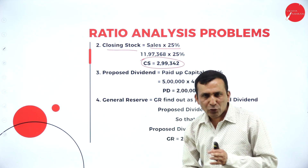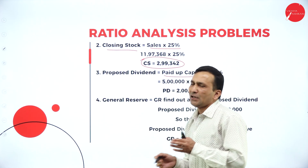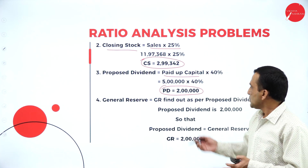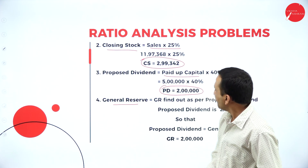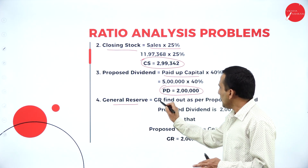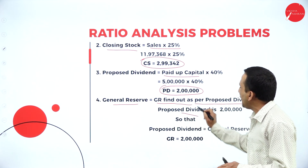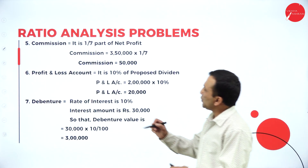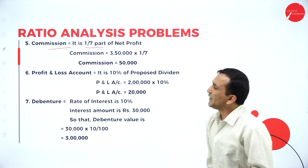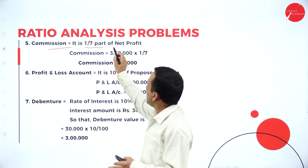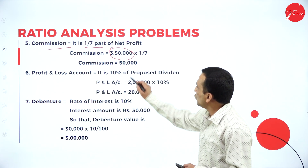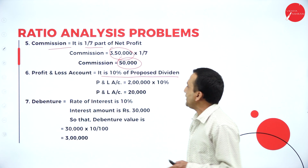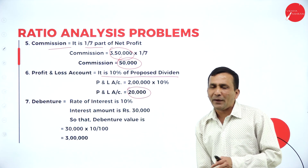There is one adjustment for proposed dividend calculation. The paid-up capital clearly given in the question is 5 lakhs into 40%, so the proposed dividend we are getting is 2 lakhs. With the help of proposed dividend, we move to general reserve — twice the proposed dividend gives us the general reserve. Proposed dividend is 2 lakhs, so the general reserve transfer is also 2 lakhs. Moving to commission: one-seventh of the net profit of 3,50,000 gives commission of 50,000. For the P&L account balance, 10% of proposed dividend (2 lakhs) gives 20,000.